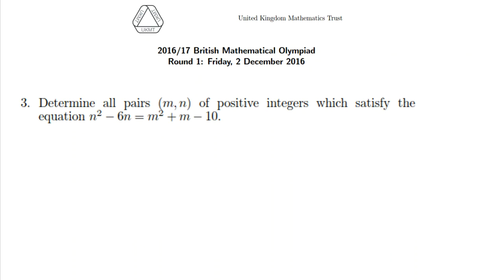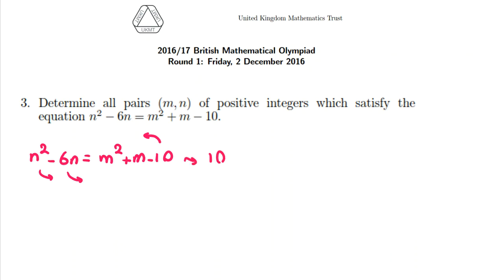I take terms to the left hand side. The equation is N squared minus 6M equals M squared plus M minus 10. I take negative 10 to the left hand side and the other terms to the right hand side, giving 10 equals M squared plus M minus N squared plus 6M.